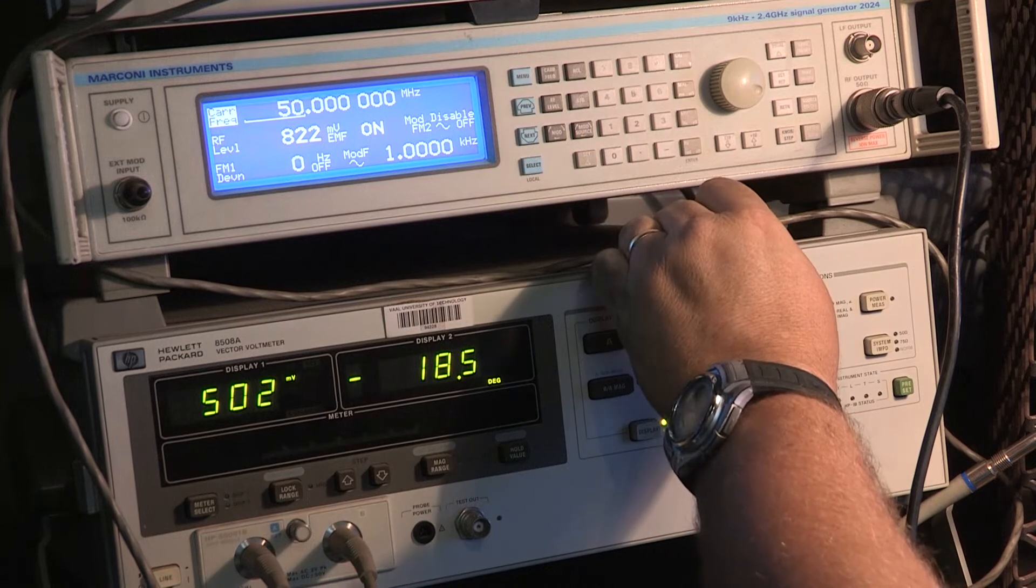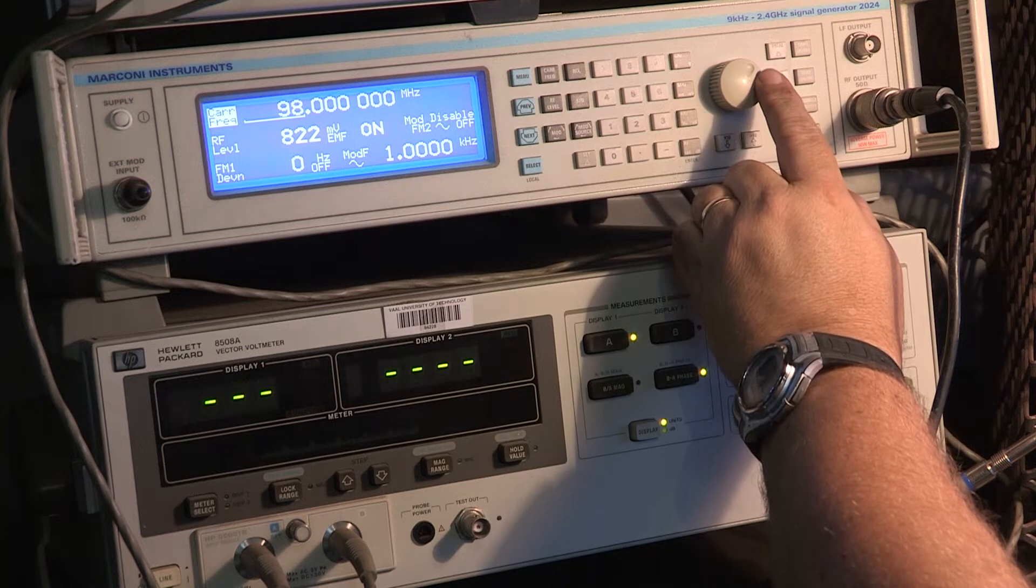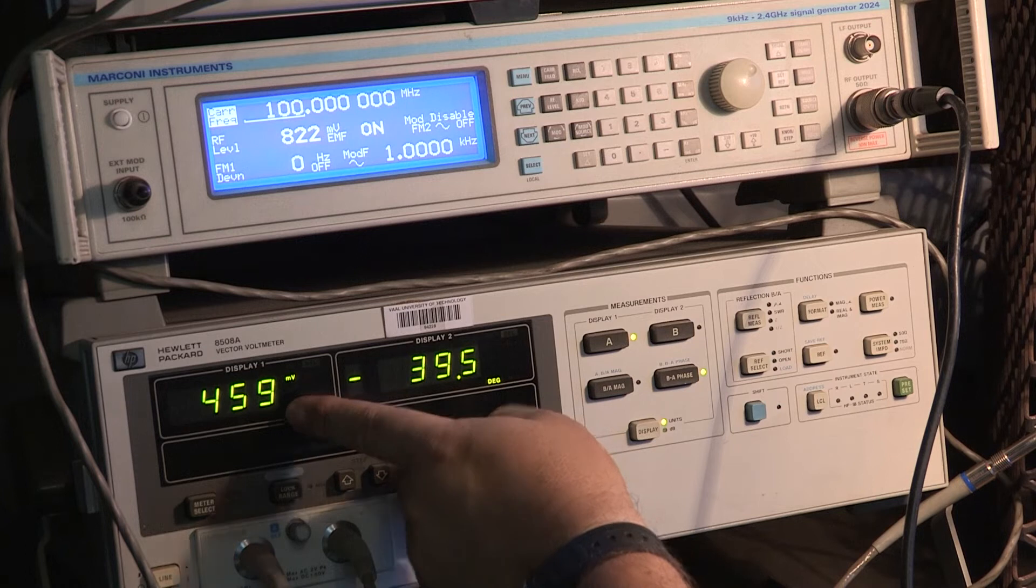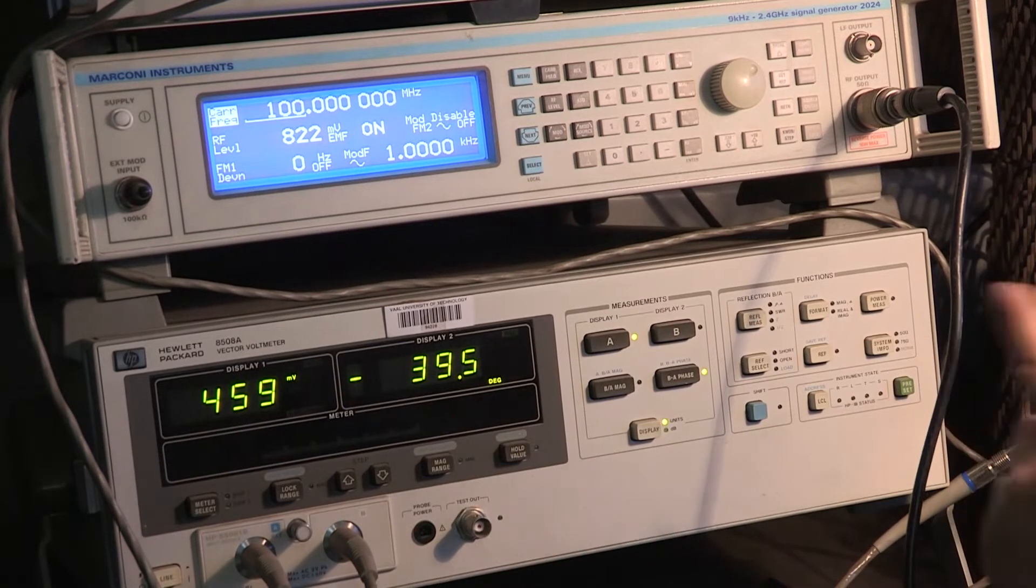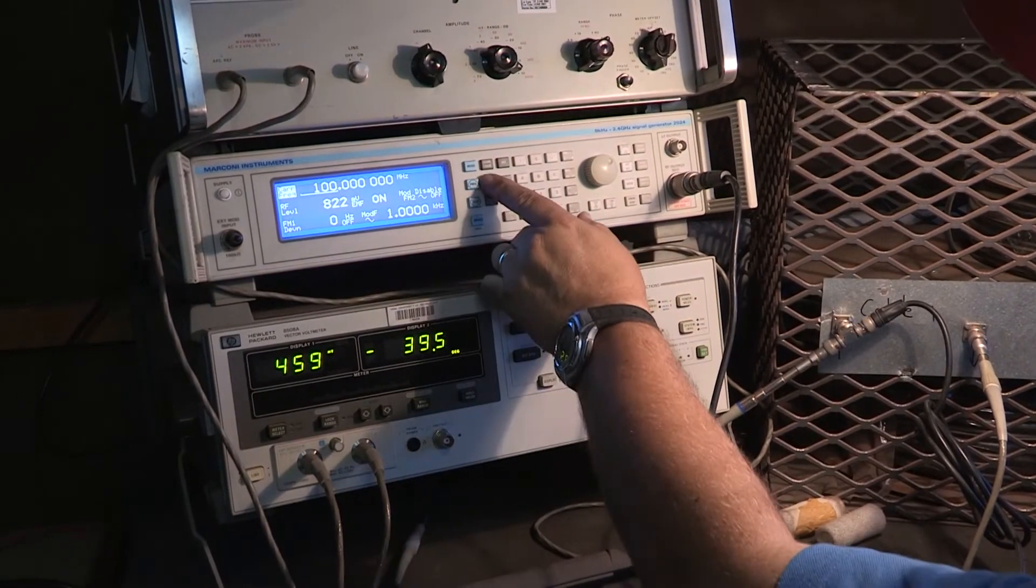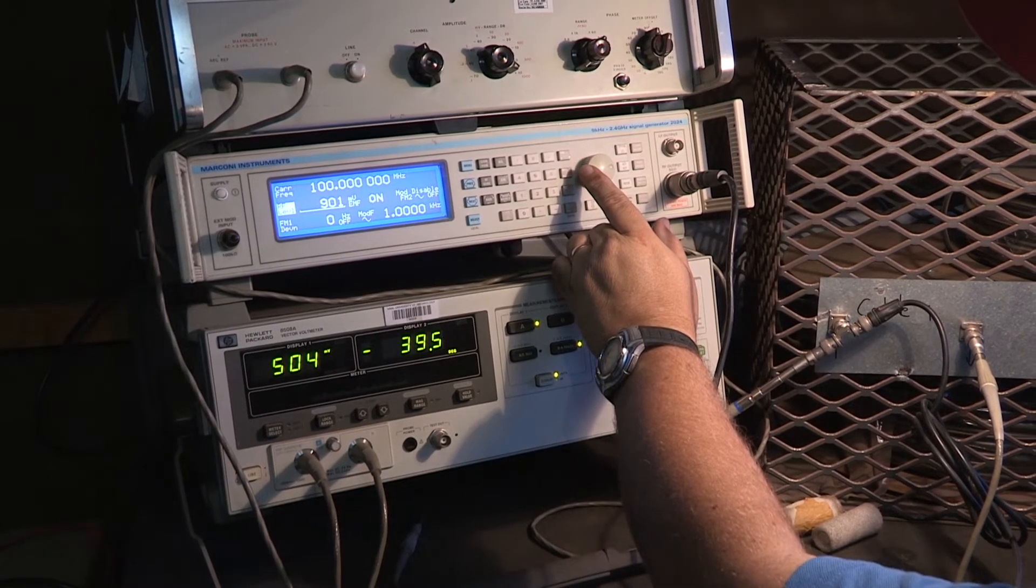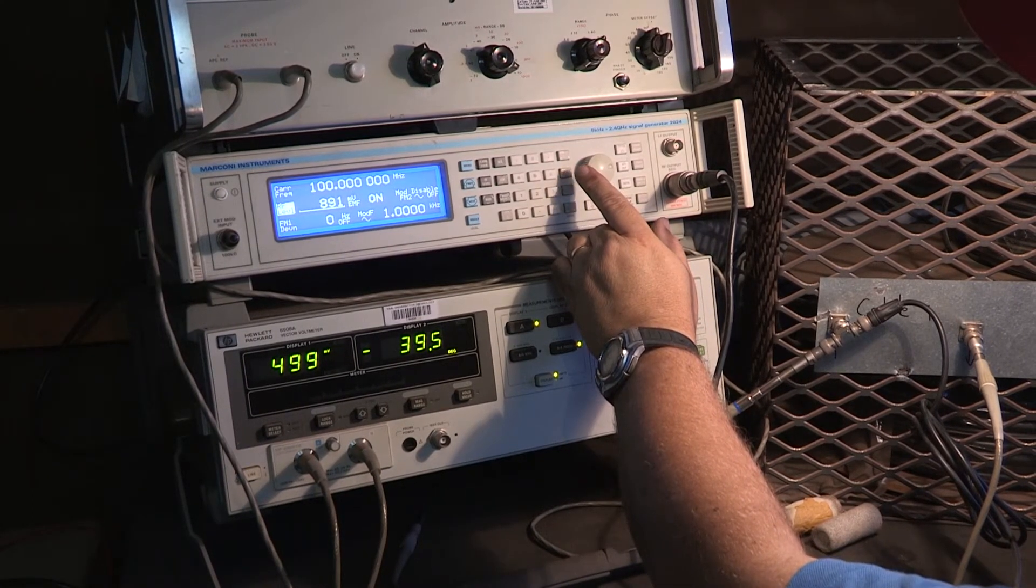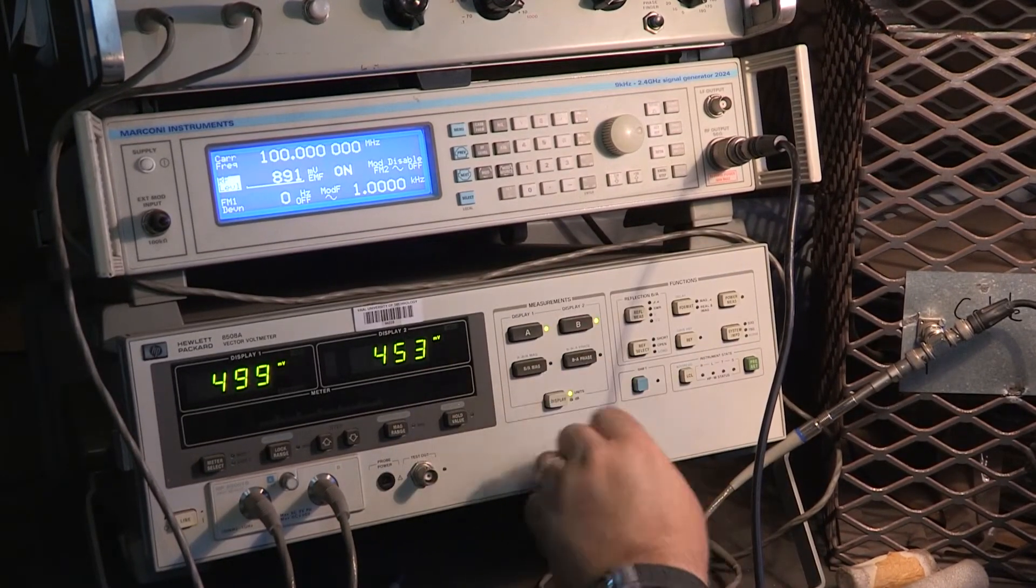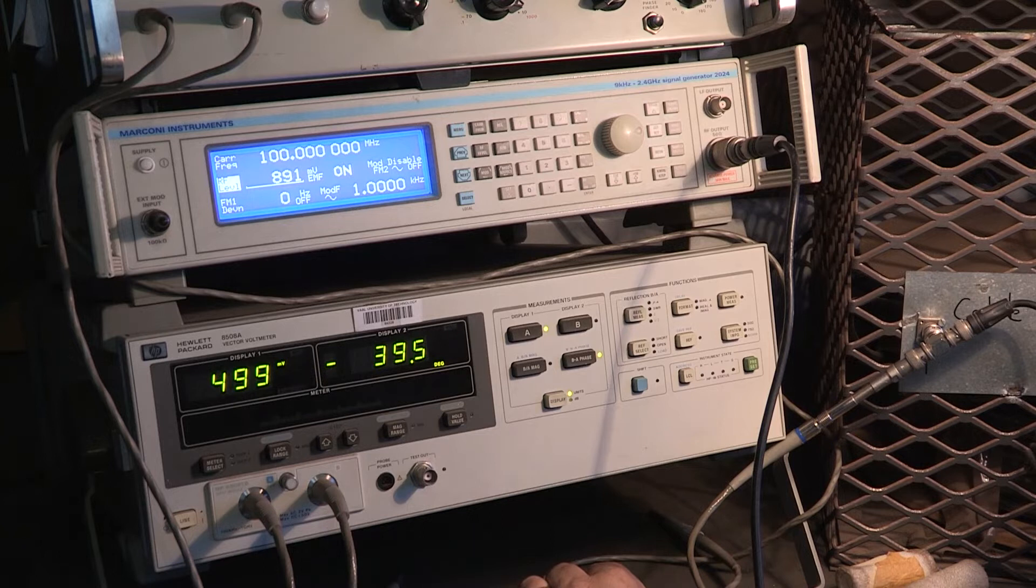Then we choose the next frequency which will be 100 megahertz. And this is now really the experiment in action. You will notice already there's been a change. Remember, the input cable between the oscillator and the cable input does have an influence, but to make sure that influence is not affecting our readings, we adjust the signal generator to get close to 500 millivolts. And now I get 453 and the phase angle minus 39.5.